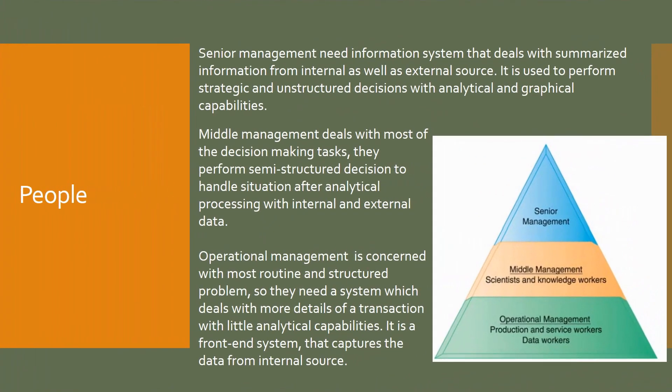Here we have some information systems for these management levels. The information system mostly needed by senior management deals with data summaries and data from internal and external sources. It is also presented in graphical format and is helpful in strategic and unstructured decisions. This type of system has more analytical and graphical capabilities. For example, an executive information system.